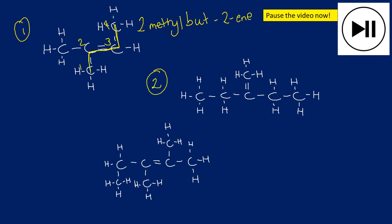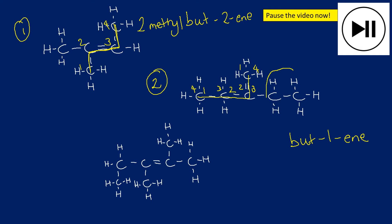For the second question: the longest chain appears to be five carbons going through the middle, but it doesn't include the functional group. The longest chain must include the functional group, so the correct longest chain is four carbons. Numbering 1, 2, 3, 4 from either end, we use the lowest number for the functional group, so this is but-1-ene. The side chain is an ethyl group (C₂H₅) and it's on carbon two, giving 2-ethylbut-1-ene.